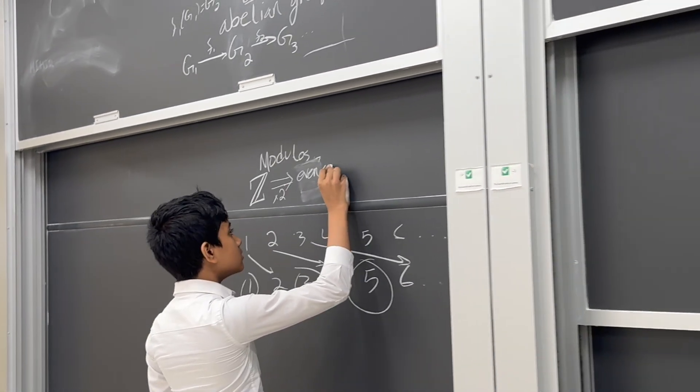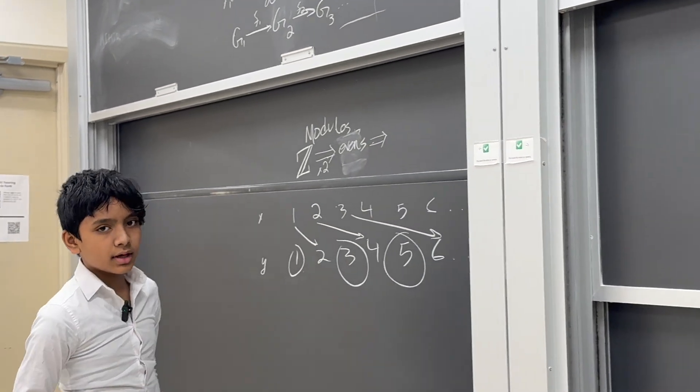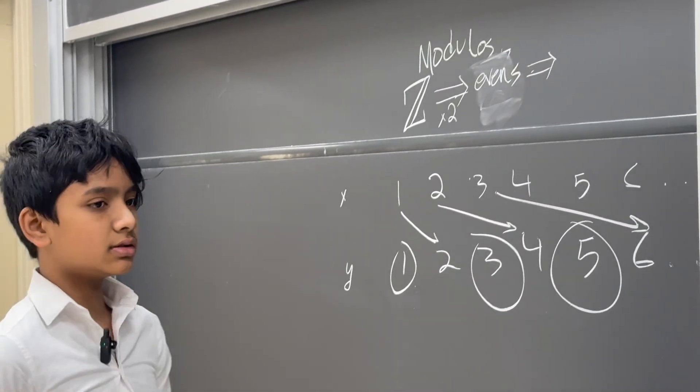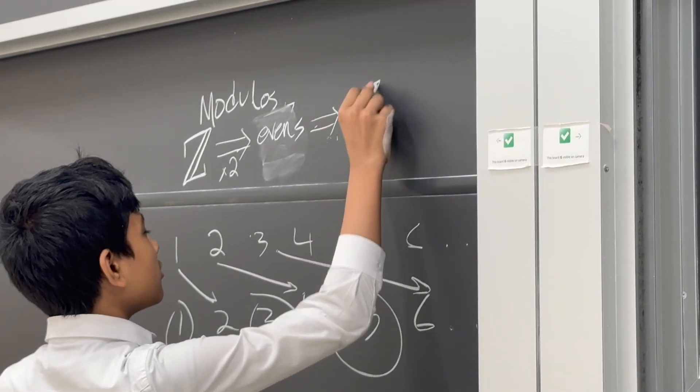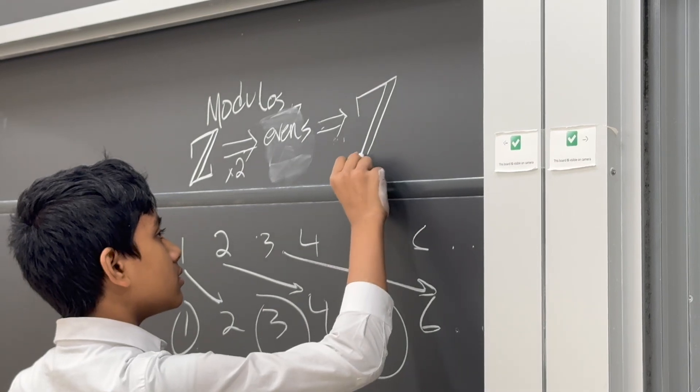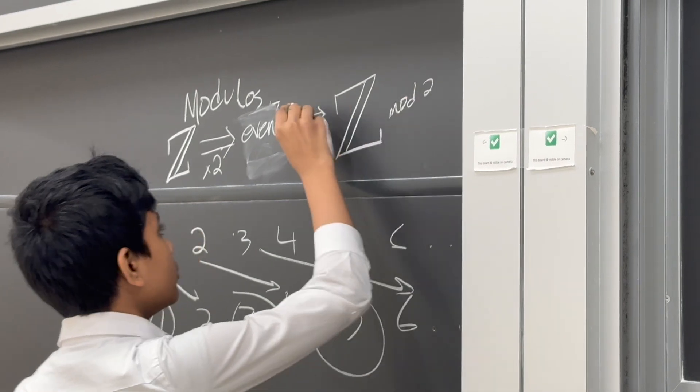And then what we're going to do is we're going to use something known as the quotient function. So essentially, what we get out here is just the integers mod 2.